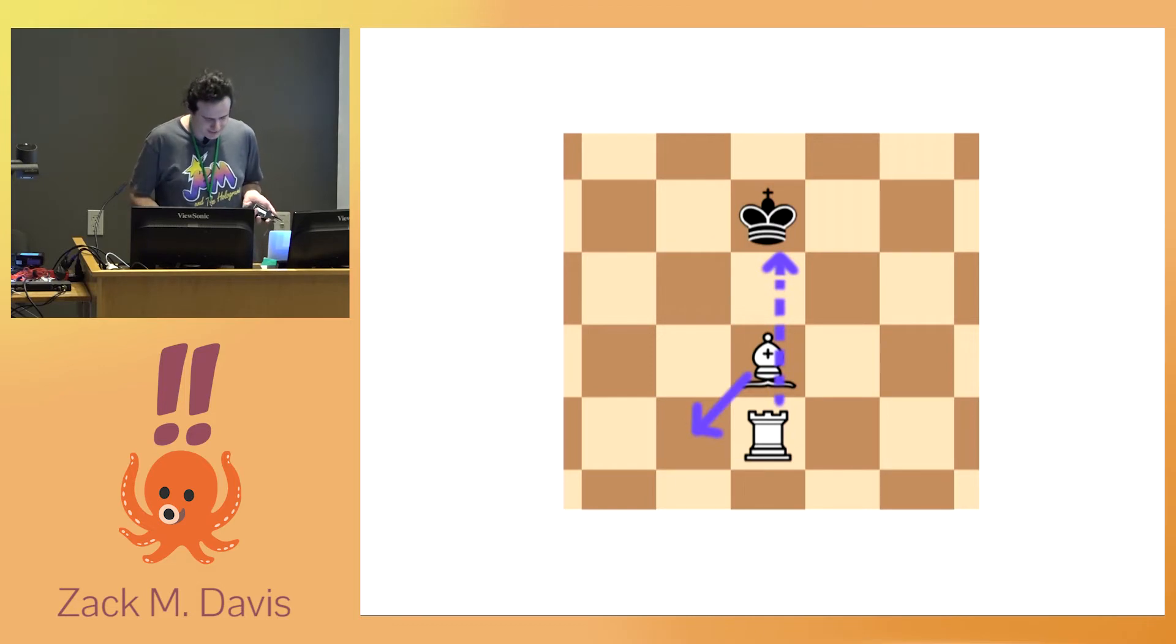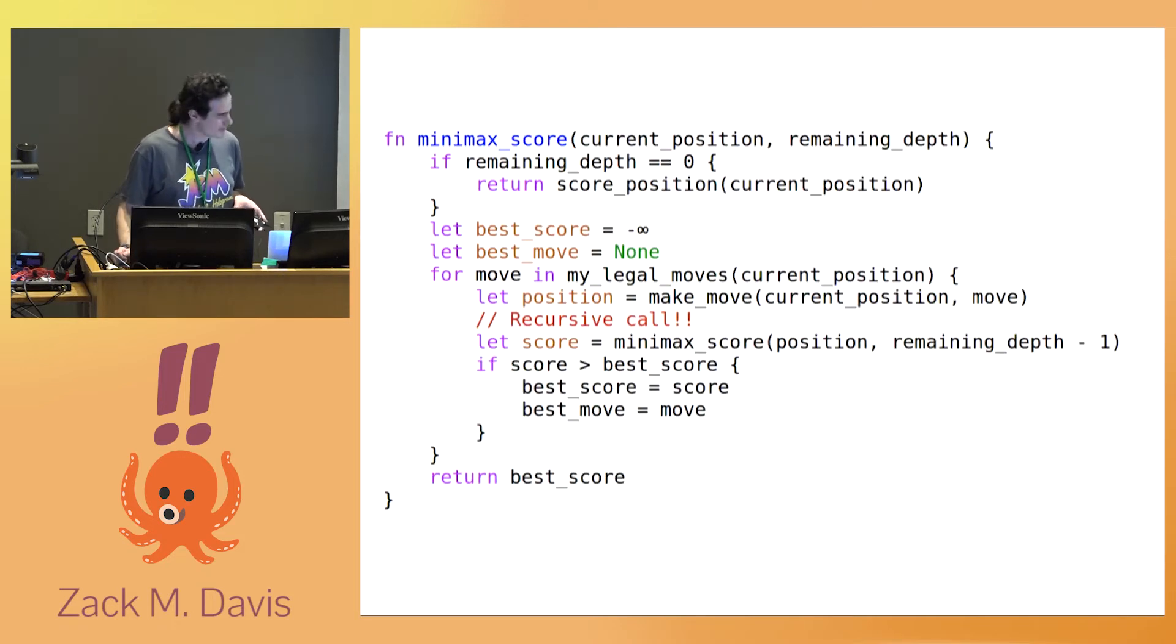And so when observing the chess engine's behavior, it's really tempting, wondering why did it do that, to interpret it in psychological terms and say, oh well, it's trying to set up that fork. It's trying to set up a discovered attack. It wants to do these things. But it can't be. Literally can't be. Because those concepts aren't represented anywhere in the algorithm.